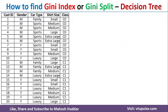In this case, we have been given a dataset with 20 examples. Gender, car type, and shirt size are the attributes. Class is the target in this case, and it has two possibilities: C0 and C1.